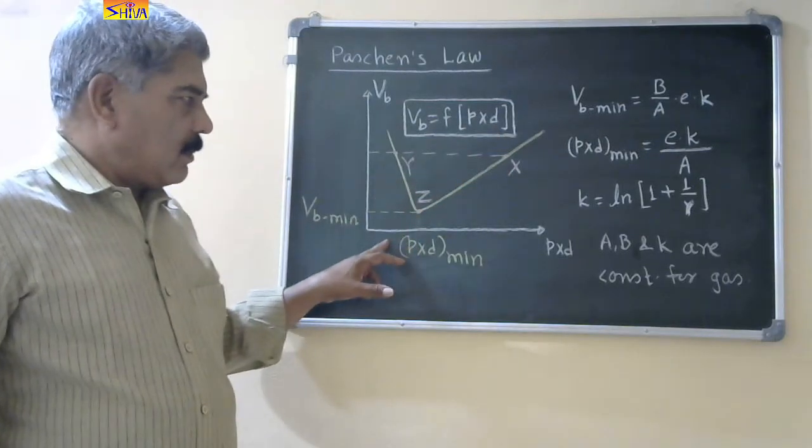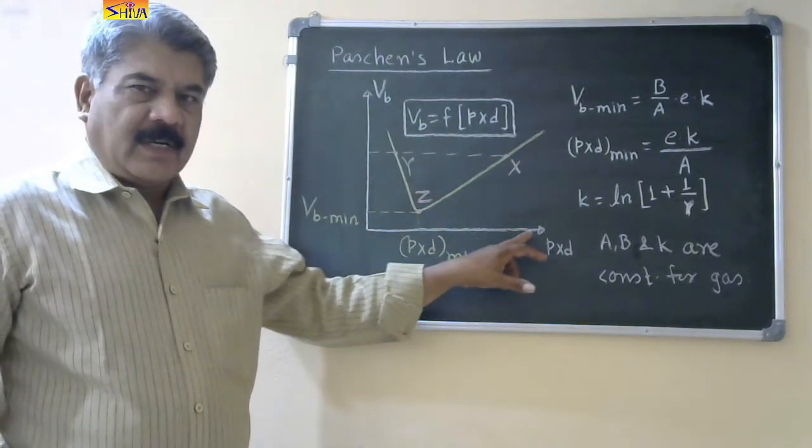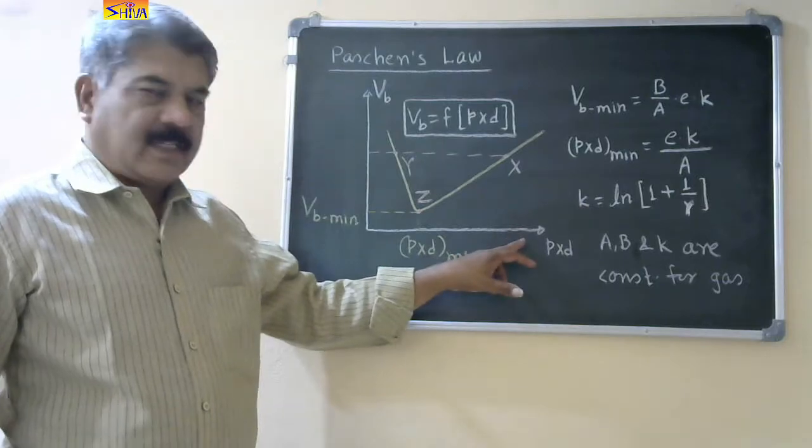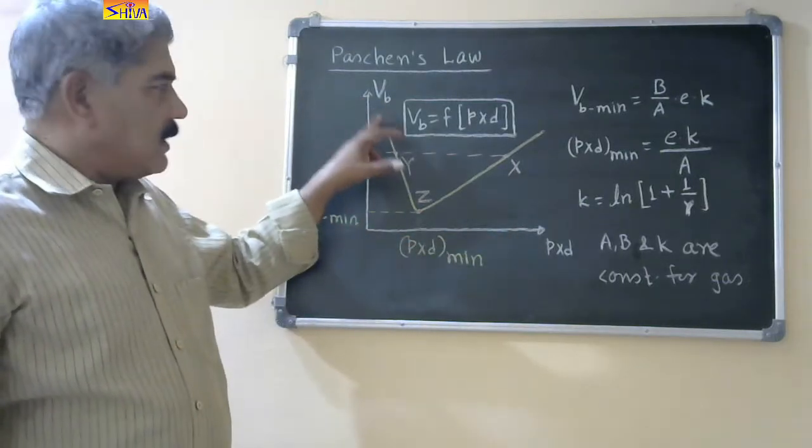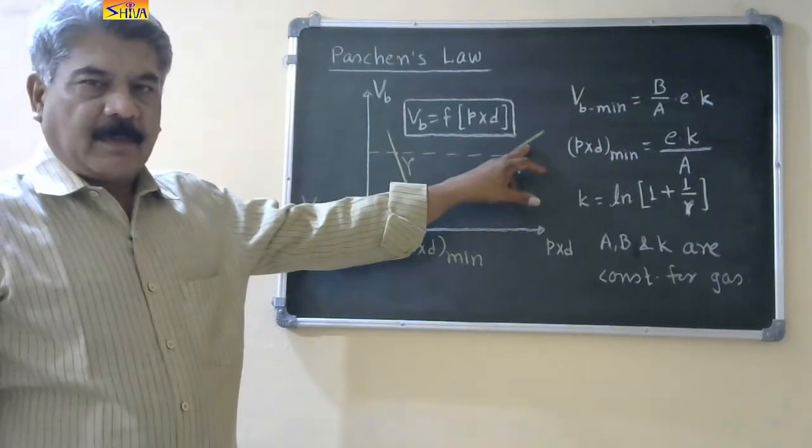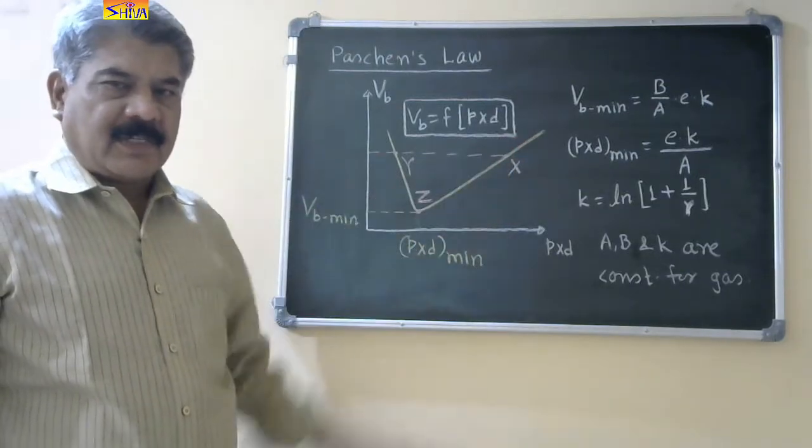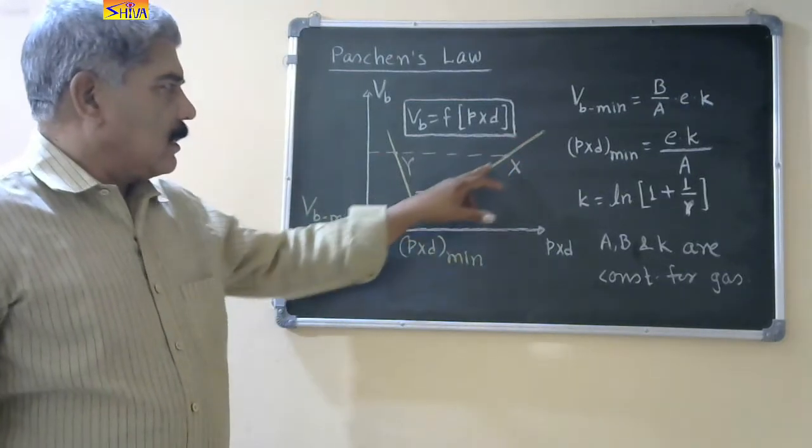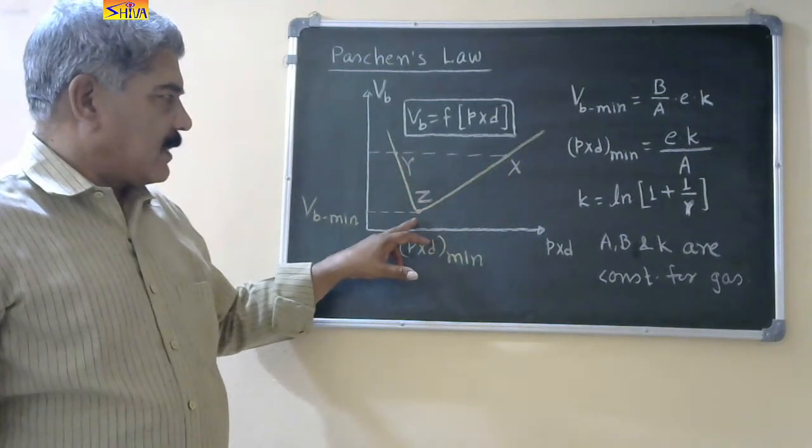If we plot product of pressure and gap spacing along x-axis and breakdown voltage along y-axis, we get this type of curve that is called as Paustian's curve. Here there are three unique points x, y and z.